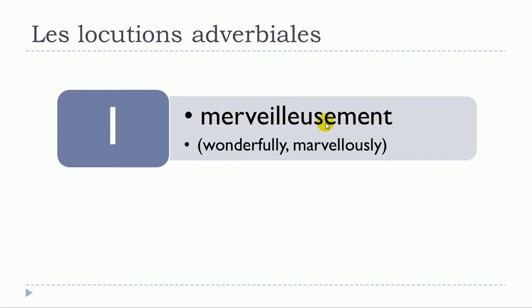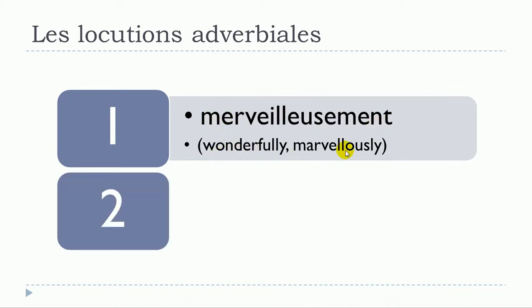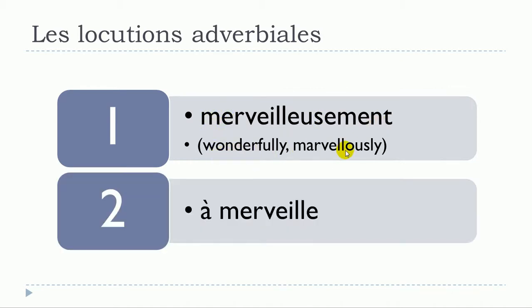Next: merveilleusement — wonderfully or marvellously. In locution adverbiale, you could use à merveille. So either merveilleusement or à merveille.